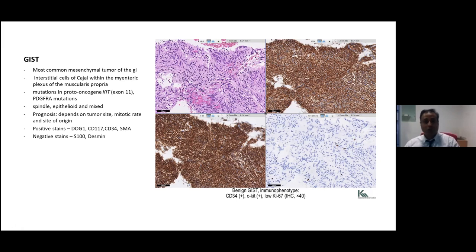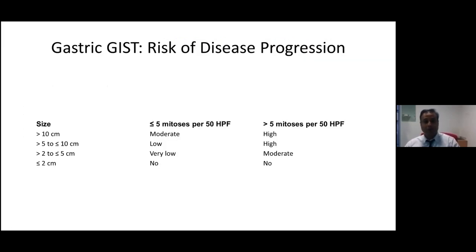The risk of disease progression in GIST: where the size is more than 10 centimeters and mitosis is less than or equal to 5 per 50 high power fields, the risk is moderate. The risk is high if mitosis is more than 5 per 50 high power fields. However, where the tumor is less than or equal to 2 centimeters, there is no risk of progression at all.